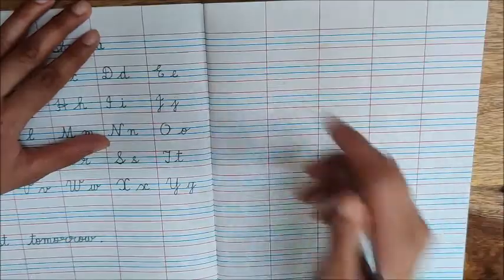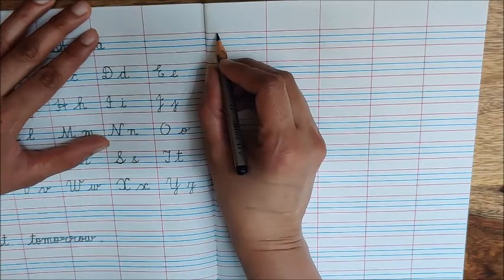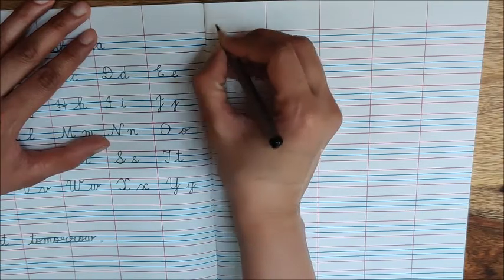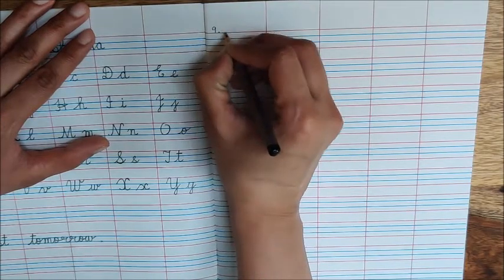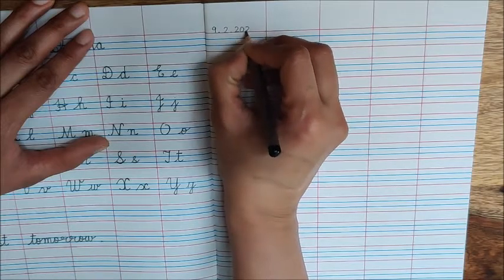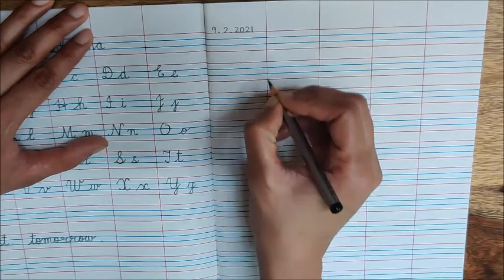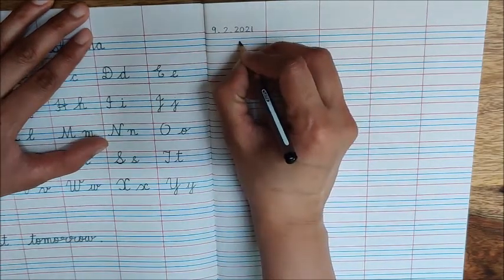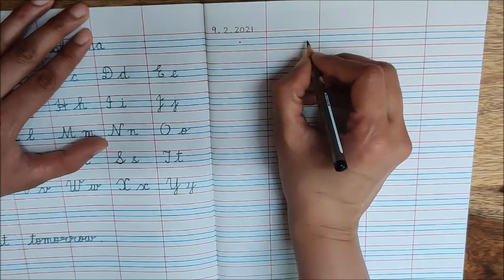Write down here today's date. Today is February 9th, 9 dot 2 dot 2021. Now children, put a dot below the date.